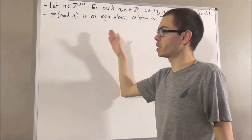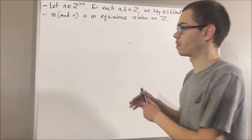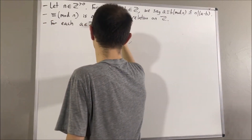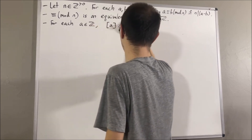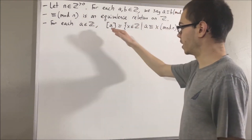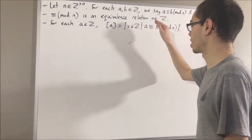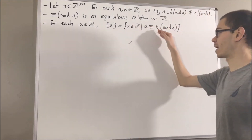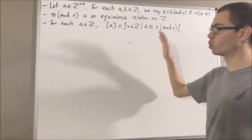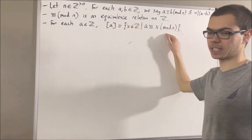So for each integer a, we write the equivalence class of a as follows. The equivalence class of a is the set of integers x such that a is congruent to x modulo n. Now in this video, we are going to talk about how we can add these equivalence classes.